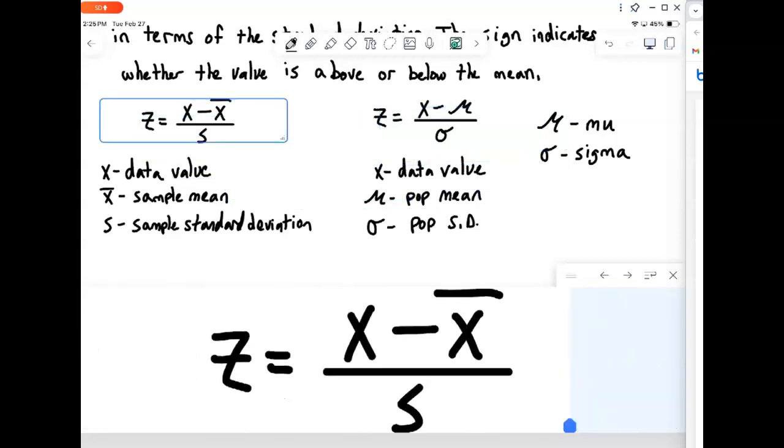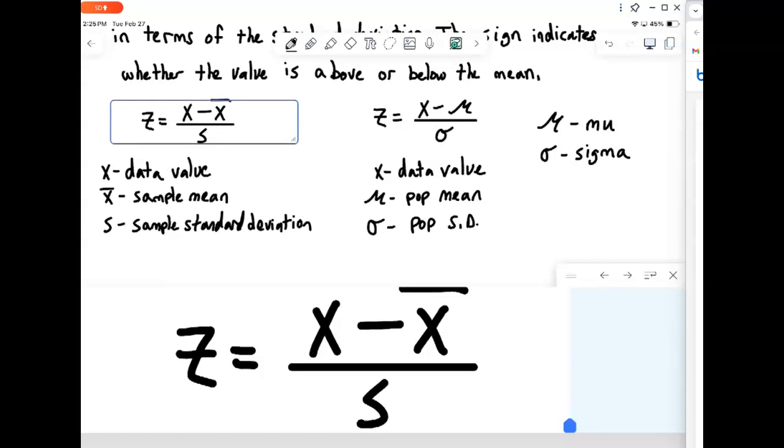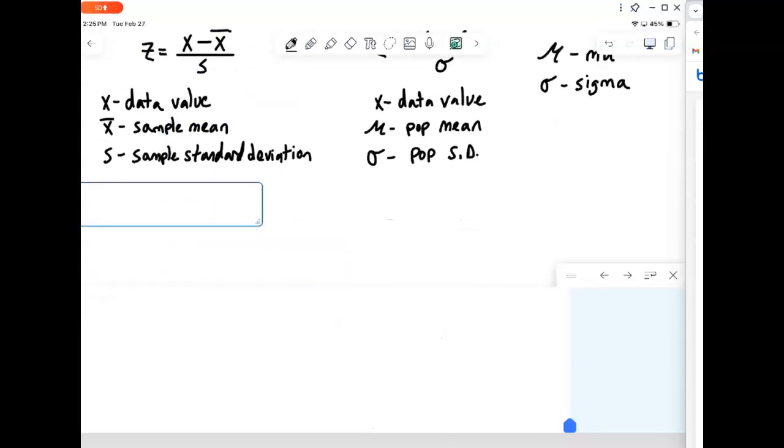Okay, so in the last video we talked about this z-score and we introduced the formula for it. Let's now see some examples where we're actually computing z-scores. And again, what z-score is, is a measure of where something is in terms of the standard deviation.